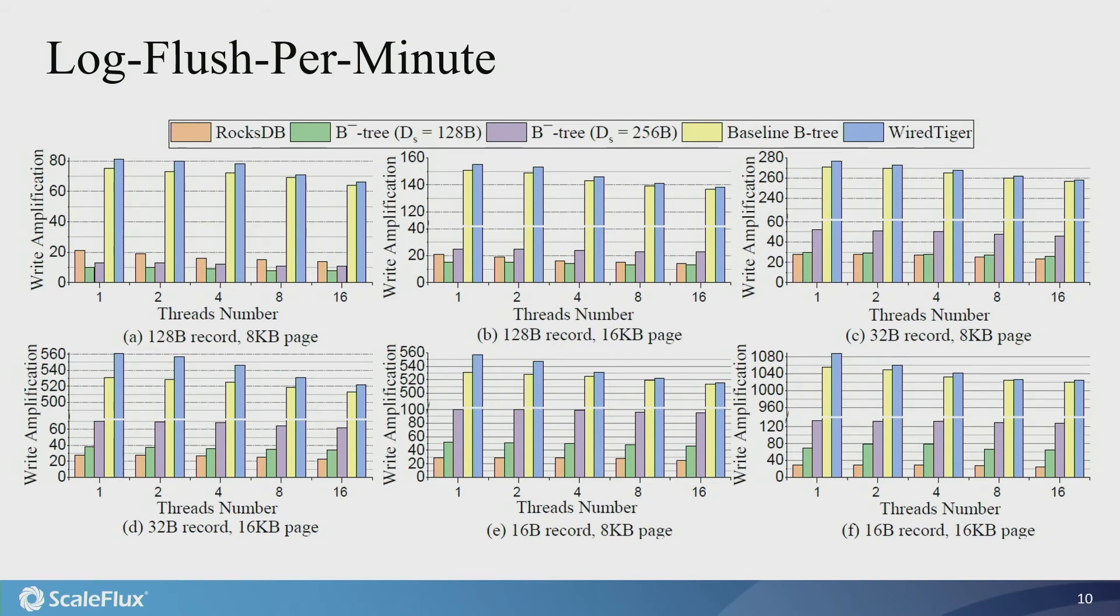Since we use the log flush per minute policy, the overall write amplification of both normal B+ tree and B-minus tree tends to be dominated by the page compressibility and write amplification caused by page writes. In the case of normal B+ tree, write amplification caused by page writes proportionally increases as we reduce the record size or increase the page size. Therefore, the write amplification of normal B+ tree almost linearly scales with the page size and the inverse of the record size.